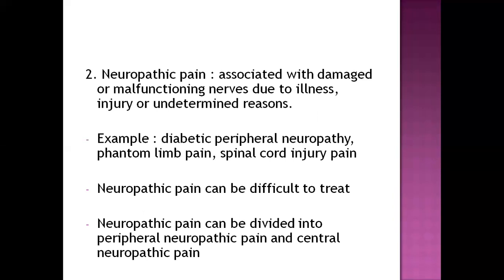Next is neuropathic pain, which is directly associated with nerves. Sometimes when our nerves malfunction due to illness, we experience neuropathic pain. We can treat the underlying disease so that the pain can be treated. This can occur in diabetic peripheral neuropathy due to prolonged untreated diabetes. Phantom limb pain occurs in patients after amputation surgery — the patient feels pain in the amputated limb. Spinal cord injury pain is another example. Neuropathic pain can be difficult to treat, even medically or surgically, and takes a long time to treat.